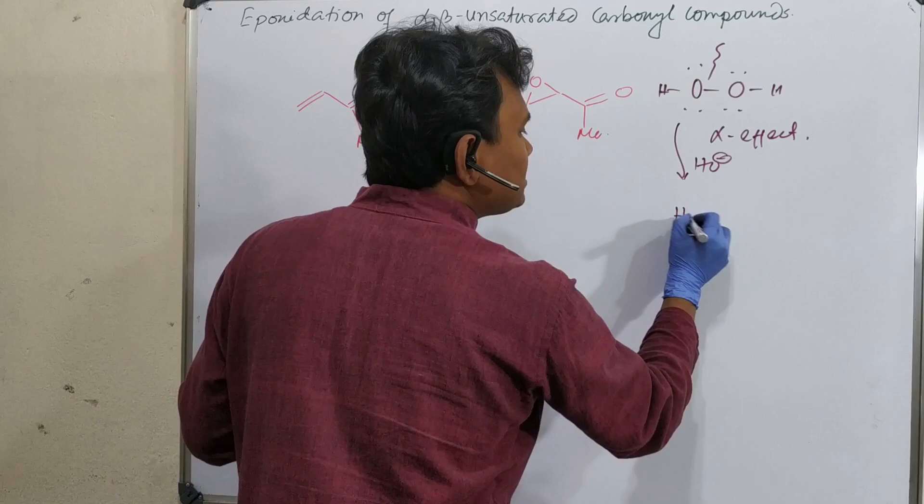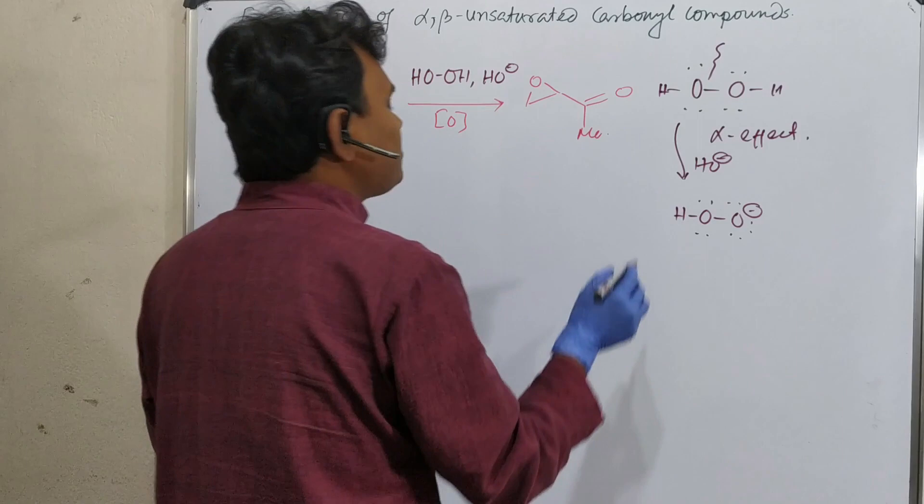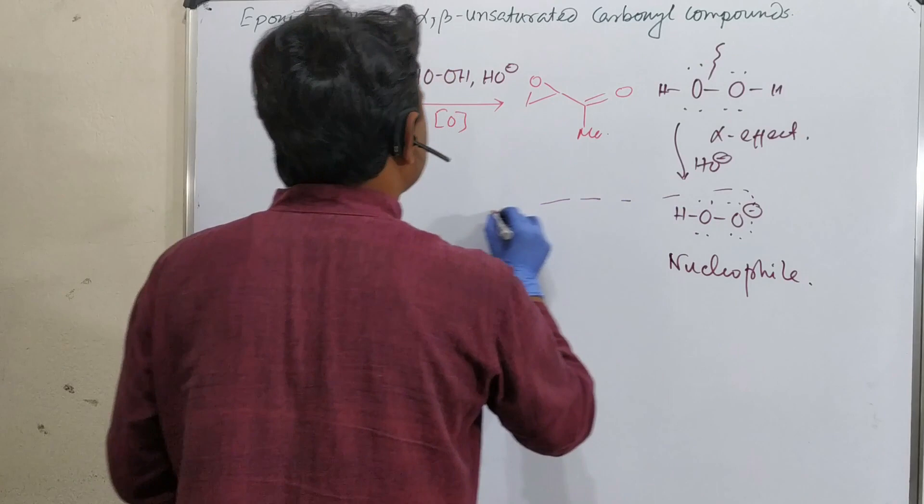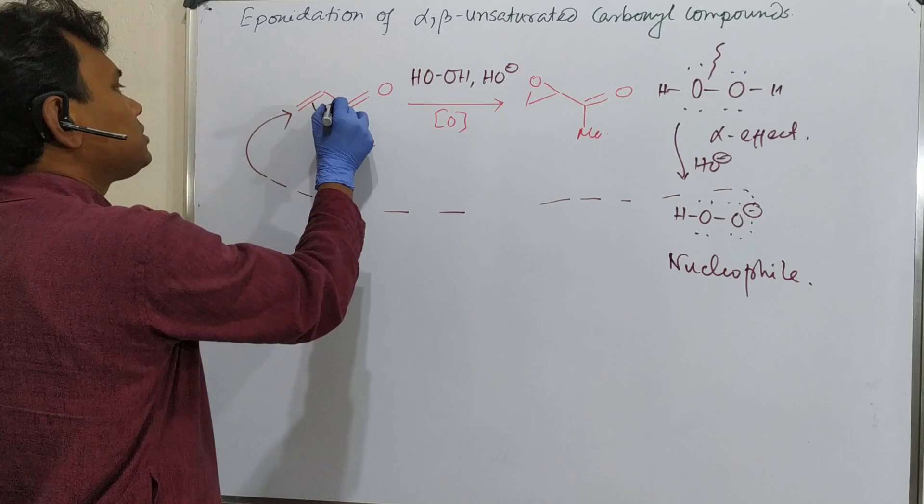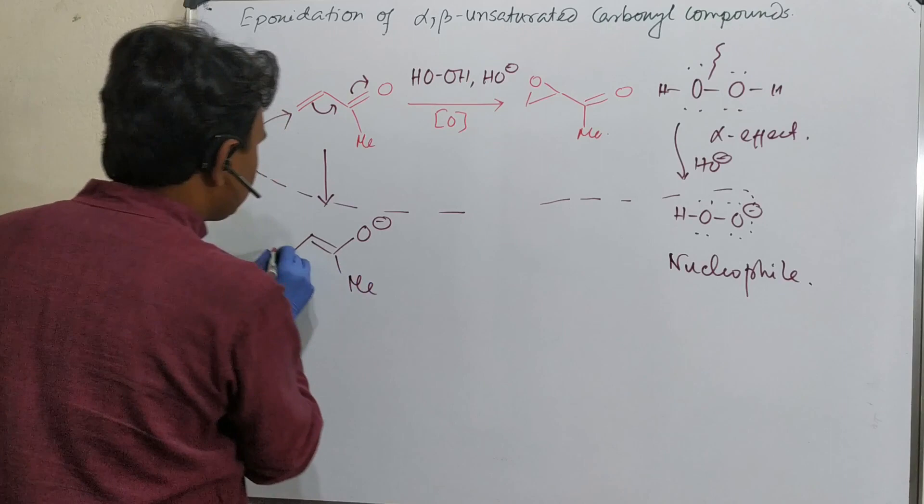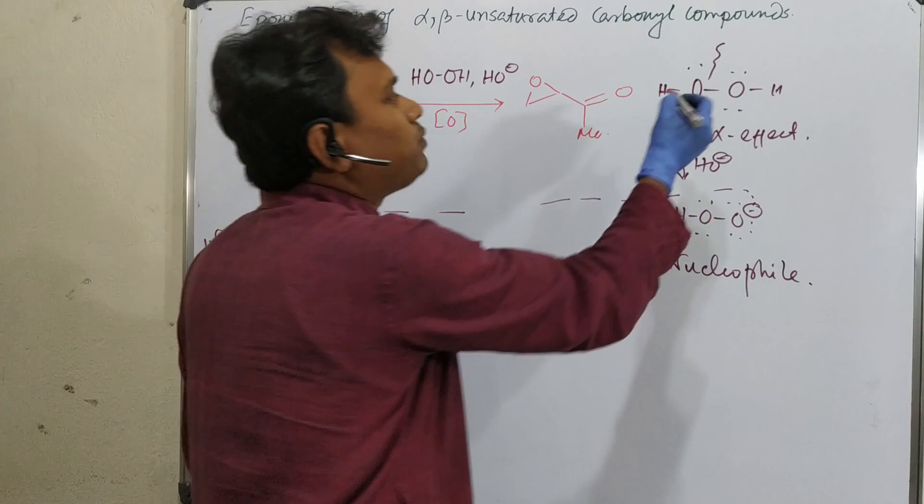So what happens? In presence of alkali, it generates this hydroxide-peroxide anion, HOO minus. So what happens? Since it is a good nucleophile, it acts as a nucleophile. So this attacks this carbon, because it is electron deficient relatively. So it attacks and the carbonyl opens. So what is the consequence?